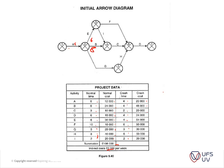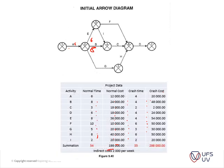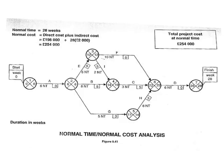The crash times and crash costs are also given in the table. To decrease activity A to four days, it will cost you twenty thousand extra pounds. Similarly, for B, to reduce it by four weeks it will cost forty-eight pounds extra. You can't just add all of these together because you won't get the right answer.